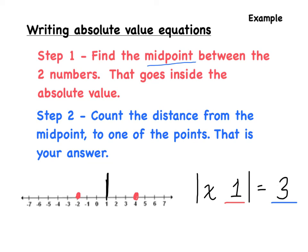Now determine the sign between x and 1. Since one of our points is 4, we ask: how do we get from x to 4? We add 1. To cancel that out, we do the opposite, giving us x minus 1. Our final answer is the absolute value of x minus 1 equals 3.